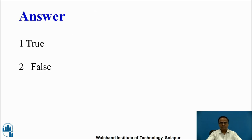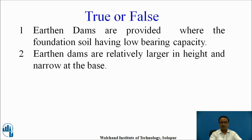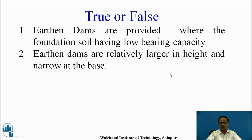The answers are: the first statement is true and the second statement is false. The first statement is true because Earthen Dams are constructed where the foundation soil has low bearing capacity, meaning a weak foundation. The second statement — that earthen dams are larger in height and narrow at the base — is absolutely false, because earthen dams are used for moderate height and have a broader base.